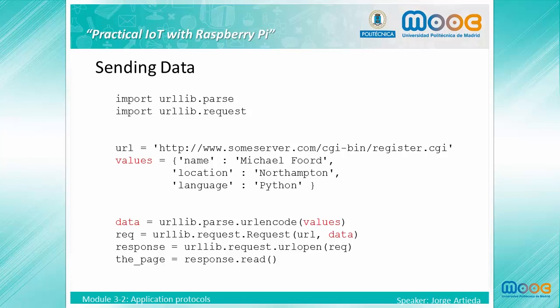Now we are going to send some data to a server. We create a request in a similar manner as in the previous example, but now we are going to use values to create URL-encoded data. Then we create our request not only using a URL but also with a data object. When we open this request, we will receive the response and the data will be sent to our server.